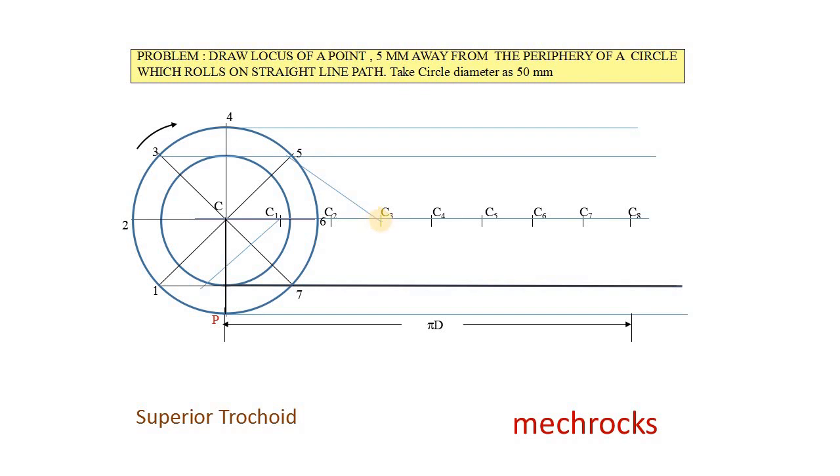C3 at the center. 30 as radius. Cut the 3, 5. If it is C4, 4th line like this. C5, 5th line. The length always equal to CP. Now, C5 as the center, 30 as radius, cuts 5th line. Similarly, C6 also.